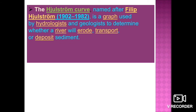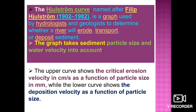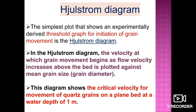Based on this diagram, we can determine whether a river will erode, deposit, or transport sediments. The graph takes both sediment particle size and water velocity into account. The upper curve shows the critical erosion velocity in centimeters per second as a function of particle size in millimeters, while the lower curve shows the deposition velocity as a function of particle size.